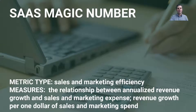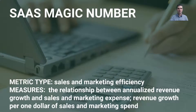The SAS magic number is a sales and marketing efficiency metric. It measures the relationship between annualized revenue growth and sales and marketing expense, giving us revenue growth per $1 of sales and marketing spend.